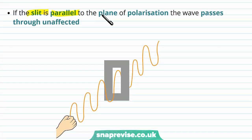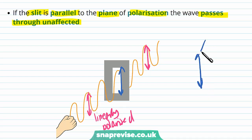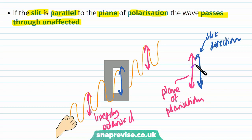If the slit is parallel to the plane of polarization, the wave passes through unaffected. If the wave is already linearly polarized and only oscillates in the same direction as the slit, the wave passes through unaffected — it's still oscillating in its initial direction, unchanged, because the slit direction is parallel to the plane of polarization.